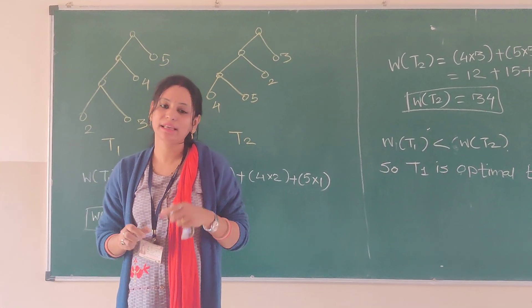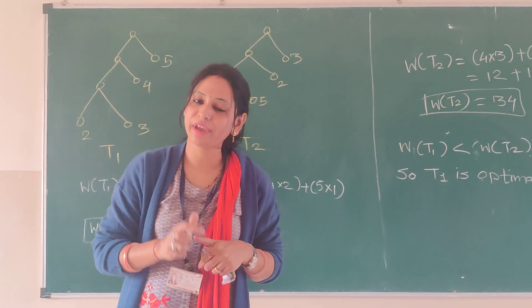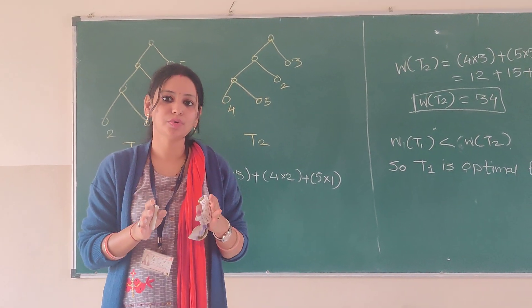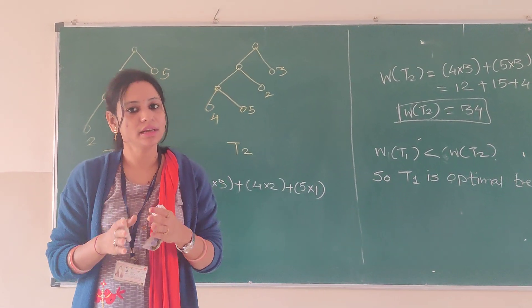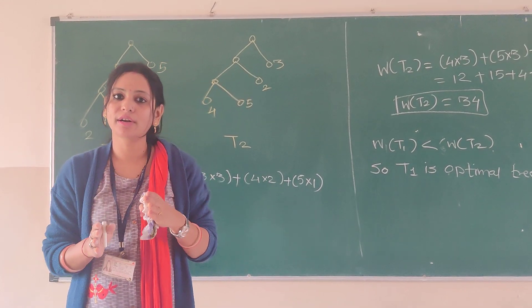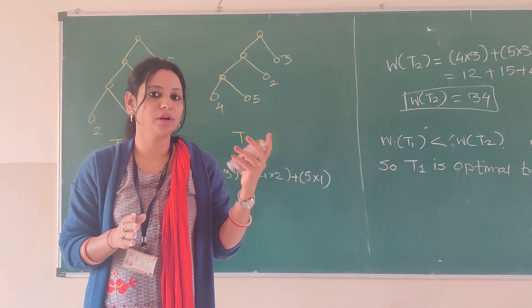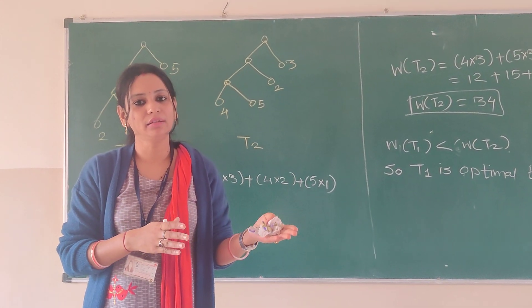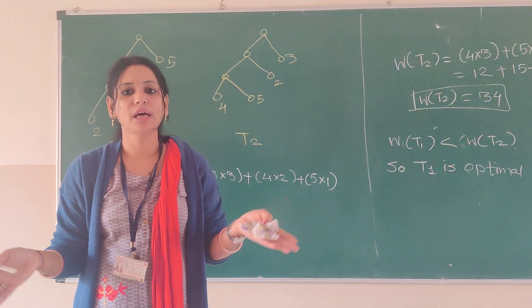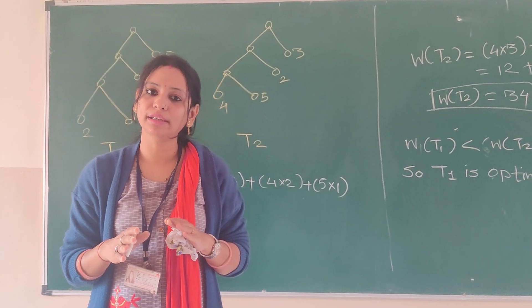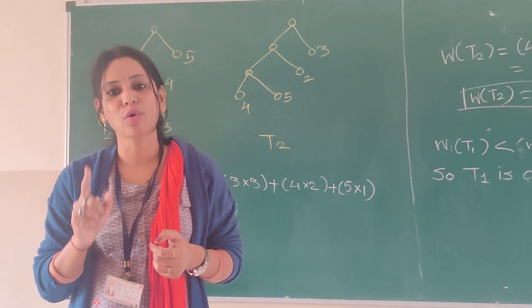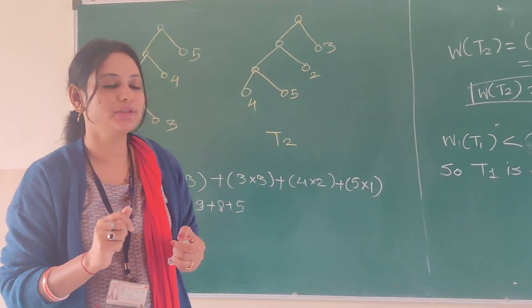Now we will see the example on optimal tree. We have seen what is optimal tree. It is mandatory that the tree should be binary tree. Each and every node should have the particular weight. Then according to the level of that particular node and combining the level number as well as weight of that particular node, we are doing summation of all it and then we are finding the weight of that tree. Then the tree having the smallest weight is the optimal tree.